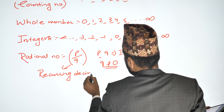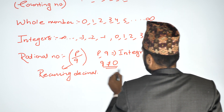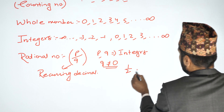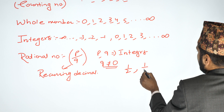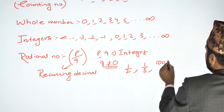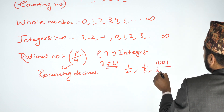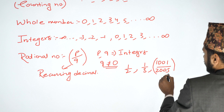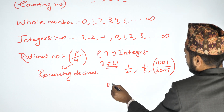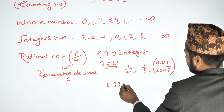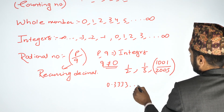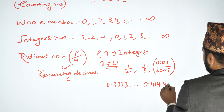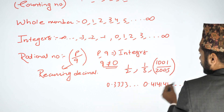Rational numbers can be expressed in decimal form. Examples include: 1/2, 1/3, 1001/2005, 0.3333..., and 0.414141... — these are all rational numbers.